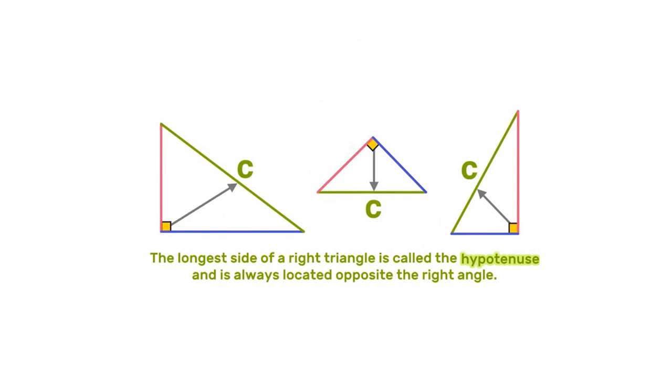Now, the longest side of the right triangle is called the hypotenuse and is always located opposite to the right angle.